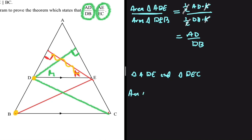The area of triangle ADE divided by the area of triangle DEC will be equal to half base multiplied by height. So let's go ahead and look at triangle ADE.